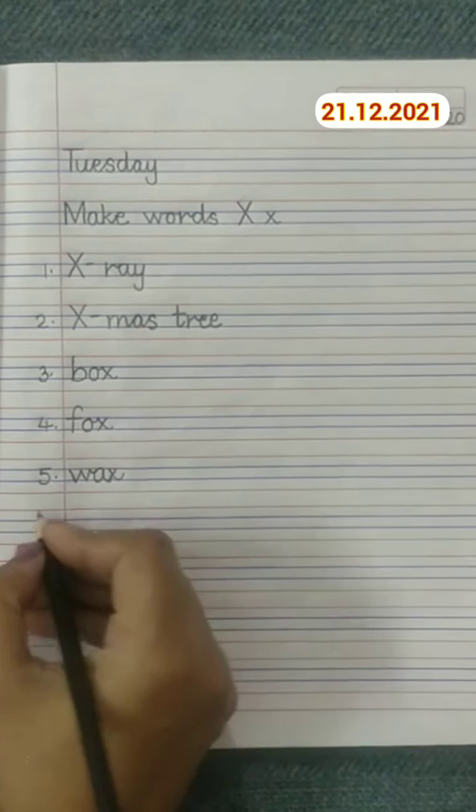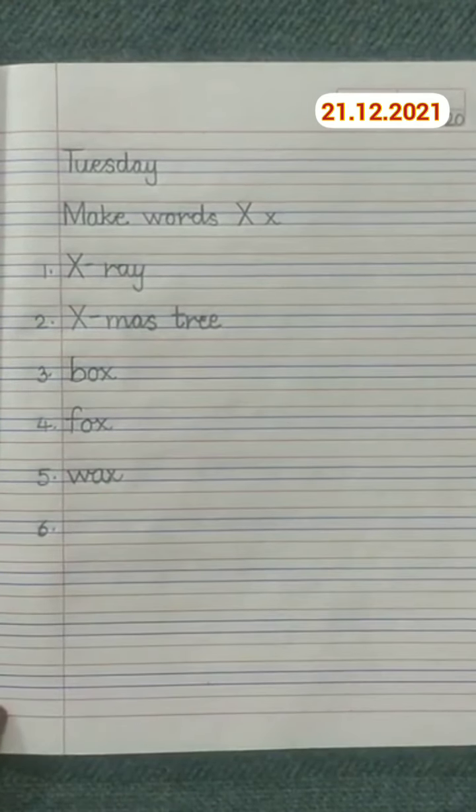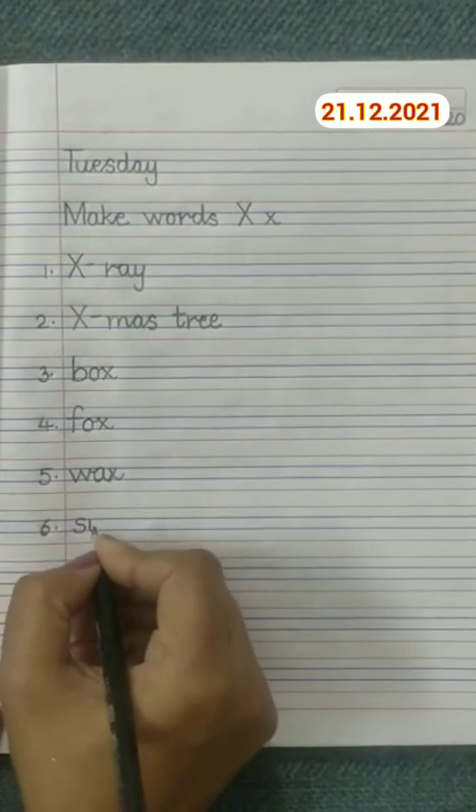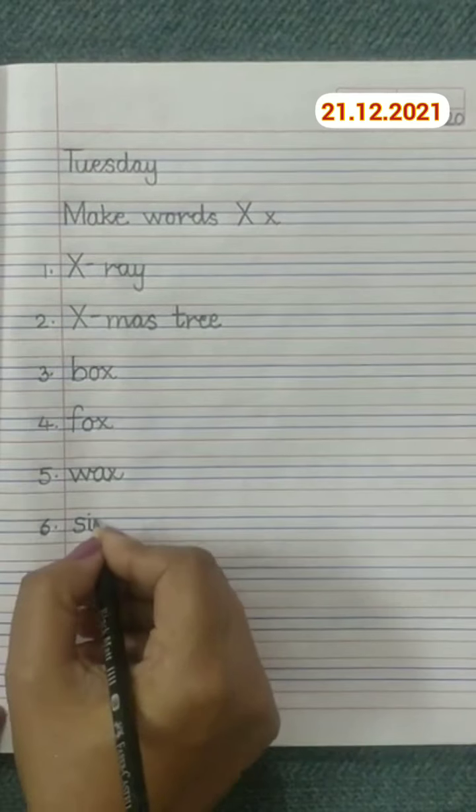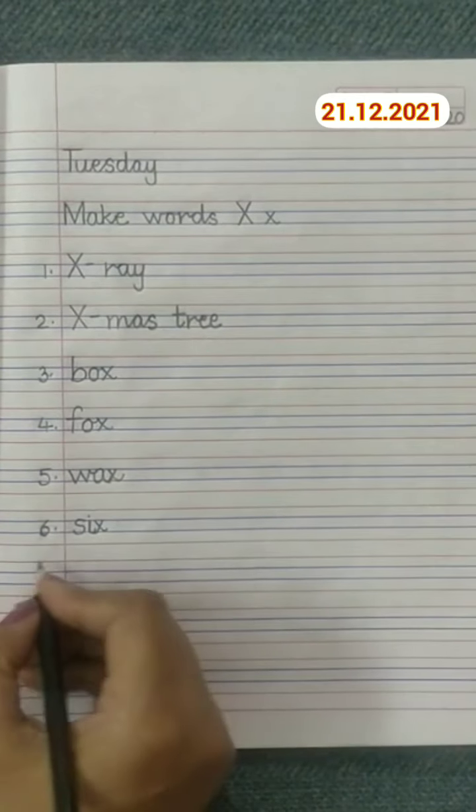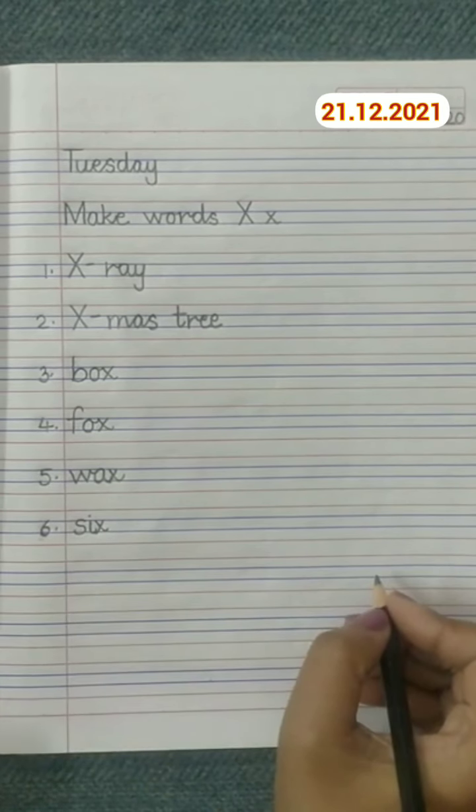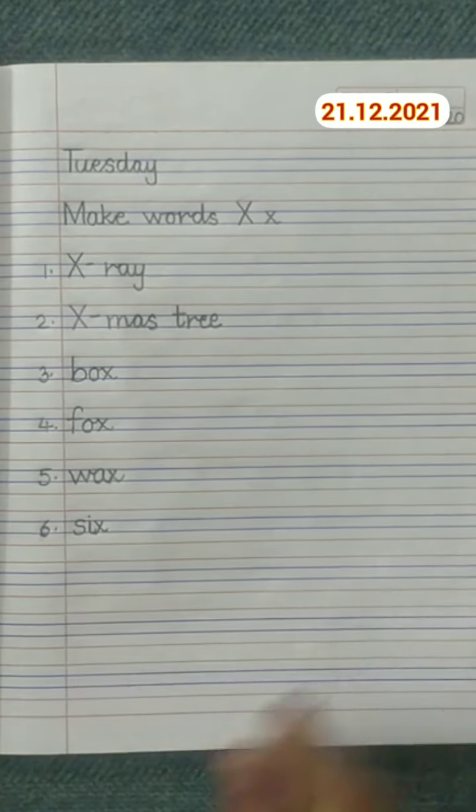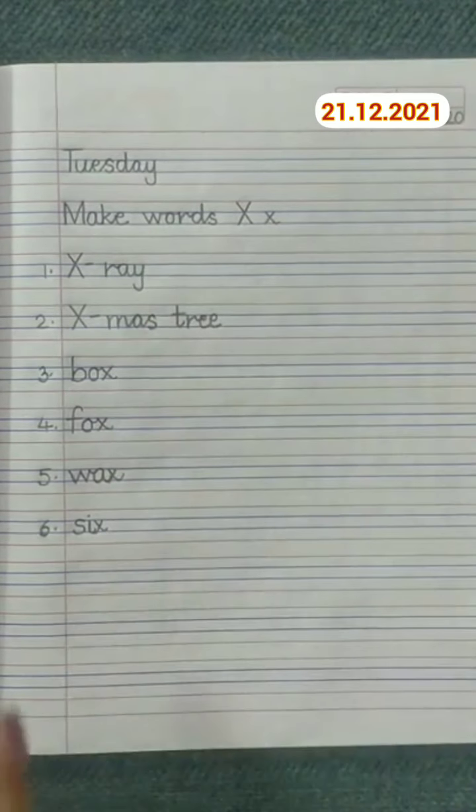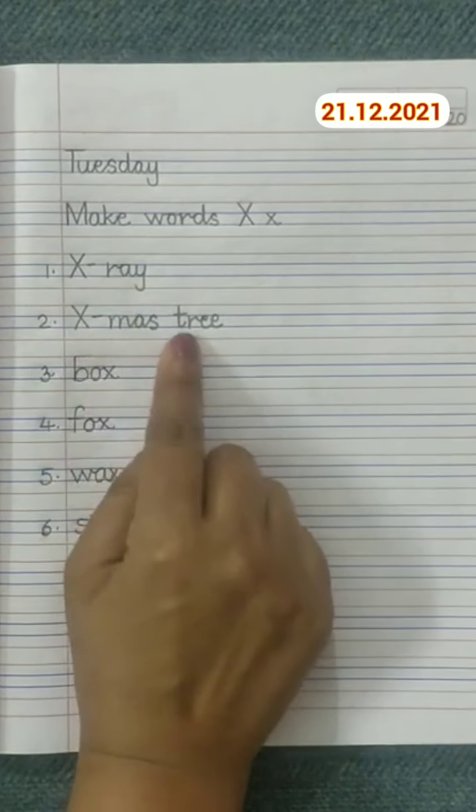Wax. Number 6: here we will write six. Six - on number 6 you will write six. Well done. And here we will write 'Draw pictures'. But first of all we will revise all these words: X-ray, X-mas tree, box, fox, wax, six. Well done.